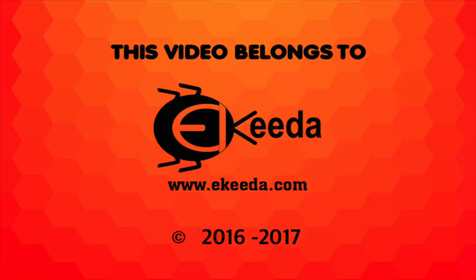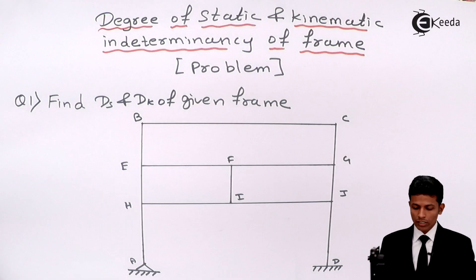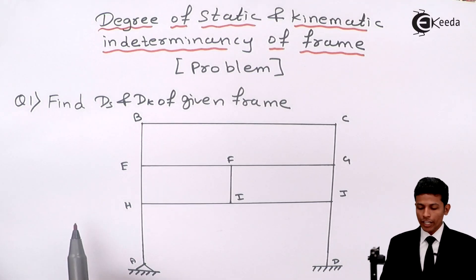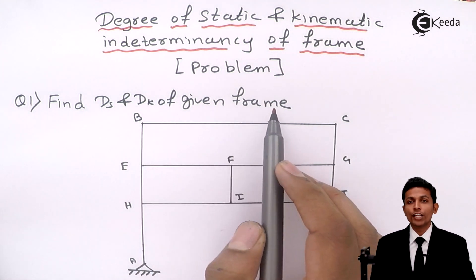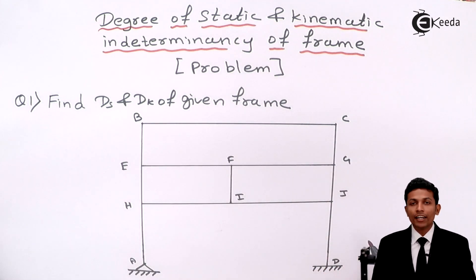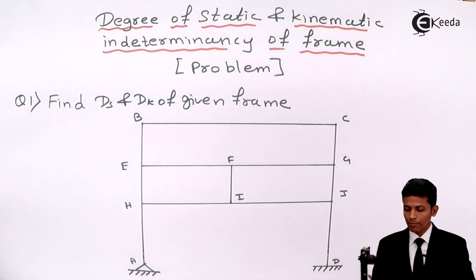We are done with beams and now we are starting frames. For better understanding, let's see in detail how to find DS and DK — degree of static and kinematic indeterminacy of structures in frames. This is problem number one: find DS and DK of the given frame.